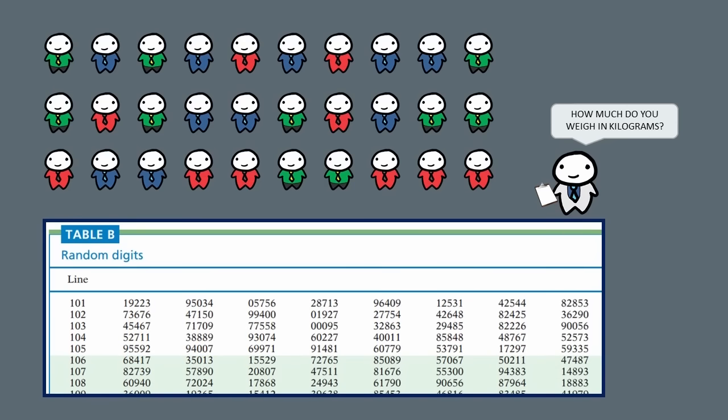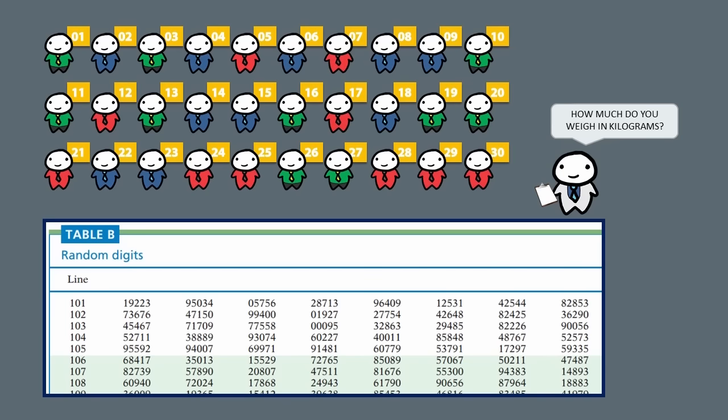To use it, I would first have to label each member of the population with a number. We have 30 people in this population, so I will label each person from 1 to 30. Notice how I have written 01 instead of just 1. Doing this helps us use the random digits table. Since each label has 2 digits, we will read the string of numbers 2 digits at a time.